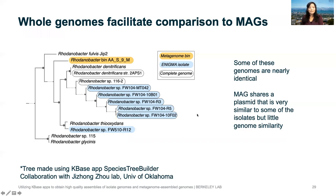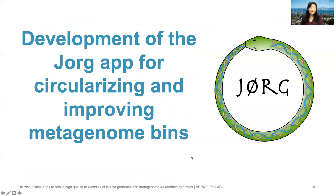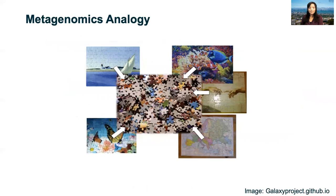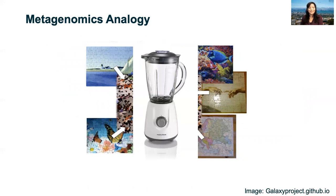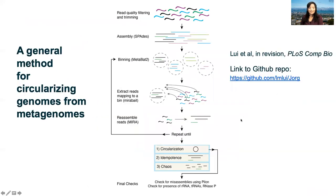Mentioning MAGs brings us to the second app, Yorg. People like to use the analogy that metagenomics is like putting puzzle pieces together, but it's actually worse than that — it's like putting everything into a blender, because assemblers work by breaking reads up into k-mers, breaking the puzzle pieces into even smaller pieces. This makes it very difficult to circularize genomes beyond just the sample complexity challenge.